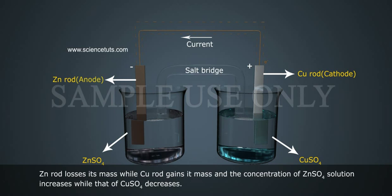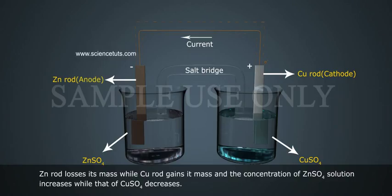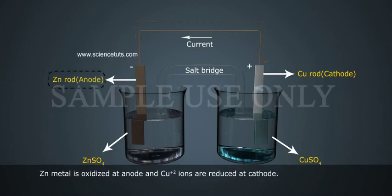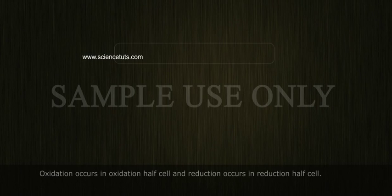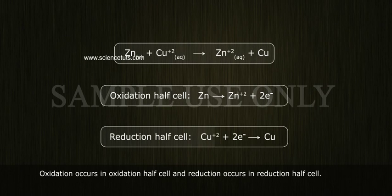The zinc rod loses its mass while the copper rod gains its mass, and the concentration of zinc sulfate solution increases while that of copper sulfate decreases. Zinc metal is oxidized at the anode and copper²⁺ ions are reduced at the cathode. Oxidation occurs in the oxidation half-cell and reduction occurs in the reduction half-cell.